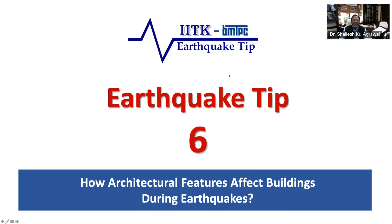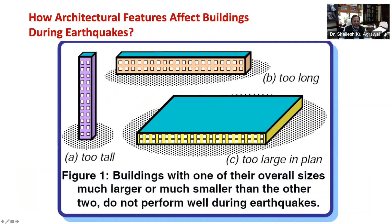Now let's look at the architectural features, beginning with the size of the building. As shown in Figure 1a, a tall building with a large height-to-base ratio experiences large horizontal movement of forces during ground shaking. Whereas in a short but very long building, as shown in Figure 1b, the damaging effects during earthquake shaking are many. As shown in Figure 1c, buildings with large plan area can experience excessive horizontal seismic forces to be carried by columns and walls.